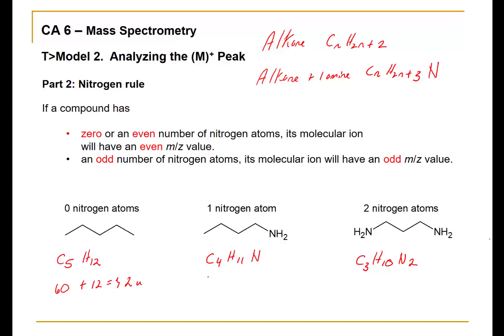For the next example, C4H11N: 4 times 12 is 48, plus 11, plus 1 times 14 — calculating the nominal masses gives 73 atomic mass units. Finally, for C3H10N2: 3 times 12 is 36, plus 10, plus 28 gives 74 atomic mass units. You can see that for these examples, the nitrogen rule applies: odd number of nitrogens yields odd nominal mass, and even yields even.